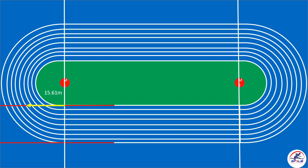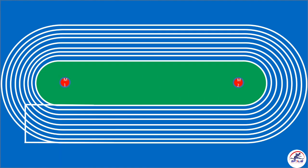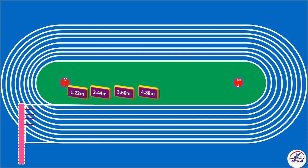Then diagonally 18.41m outward of the track. Now again measure 15.61m backward on line 9. Now connect these points. Keep the measuring tape on the start line of 100m, then mark 1.22m, 2.44m, 3.66m similarly. Should not mark 1.22m separately. Then we have to join these markings with the home stride lines.